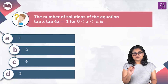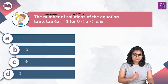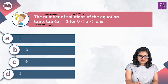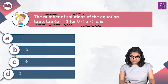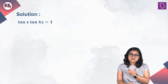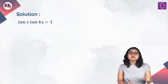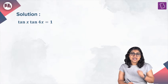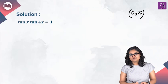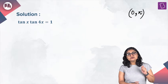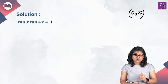In this question, we have to find out the number of solutions of the equation tan(x) multiplied by tan(4x) equals 1, lying in the interval (0, π). We are going to rewrite the left-hand side in terms of sine and cosine, giving us sin(x)/cos(x) multiplied by sin(4x)/cos(4x) equal to 1.